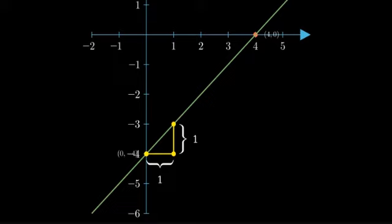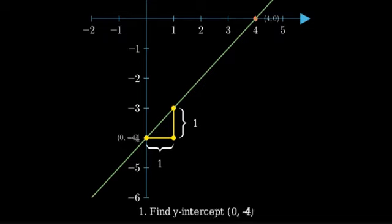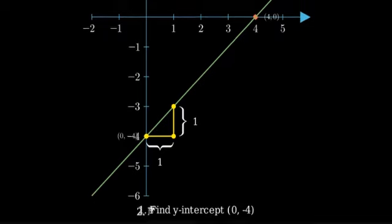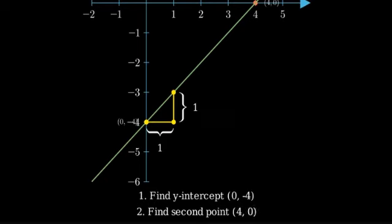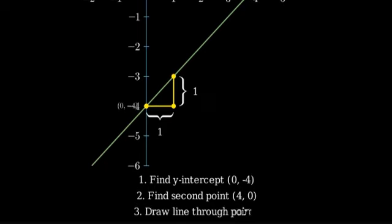To summarize, we graphed y equals x minus four by first finding the y-intercept at zero comma negative four, then finding a second point at four comma zero, and finally drawing the line through these points.